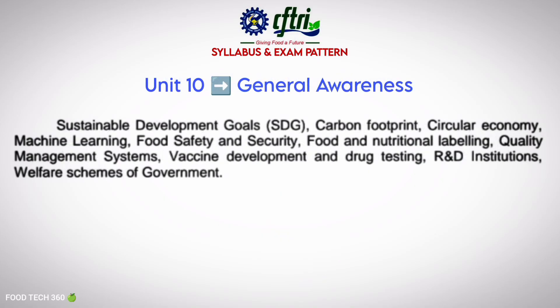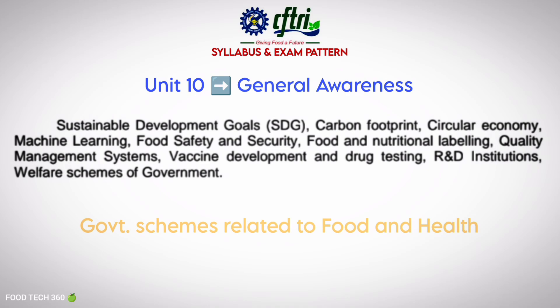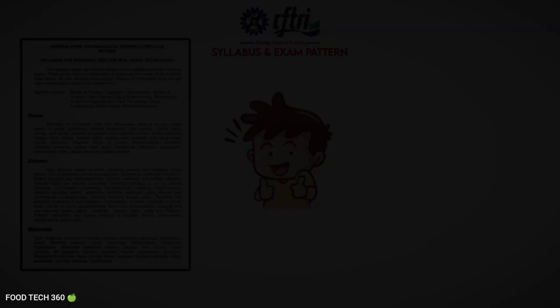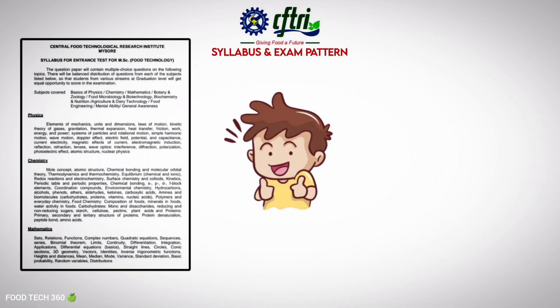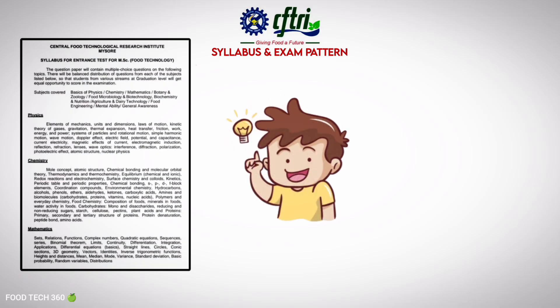Unit 10 is General Awareness. This includes sustainable development goals, food safety, nutrition labeling, machine learning, and current government schemes related to food and health. So that's your full syllabus — it's wide-ranging but very doable if you prepare smartly. Focus on your strong subjects first and gradually build on the others.